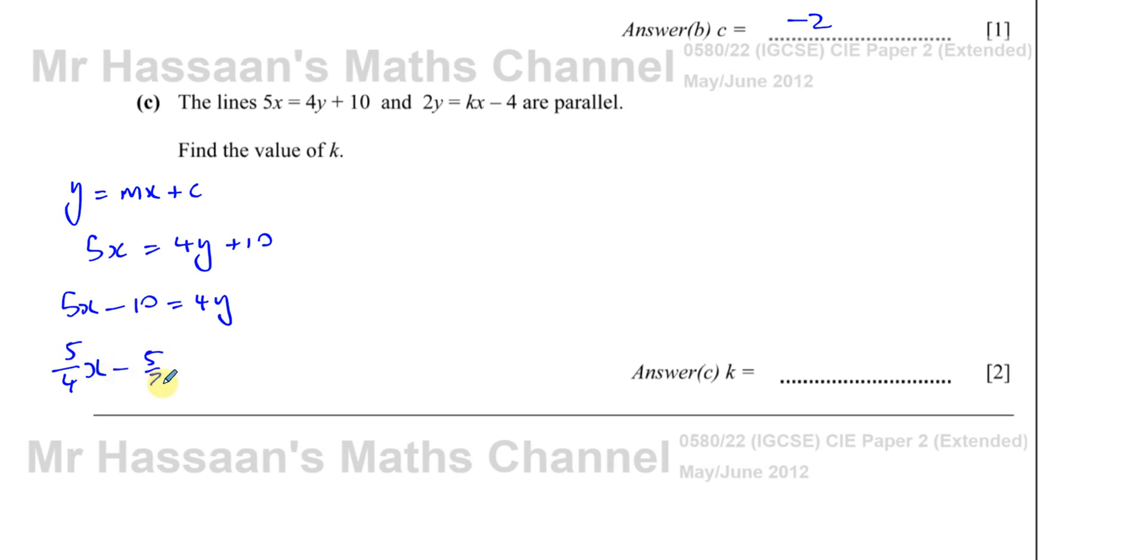So you have 5/4 x - 10/4, which is 5/2, equals y. I've divided them separately by 4 because I want the x term to be separate. I can see that the gradient of this line is 5/4, which means the gradient of this line must also be 5/4. So if you look at this line, you have 2y = kx - 4.